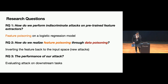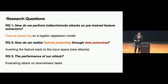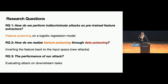Suppose we already have some poison features in the feature space. The next step is that we cannot directly use them, because attacks cannot be deployed directly in feature space. So the second question is how to invert them back to the input space through data poisoning. The third question is to examine the performance of our attack on different downstream tasks given a pre-trained encoder F.